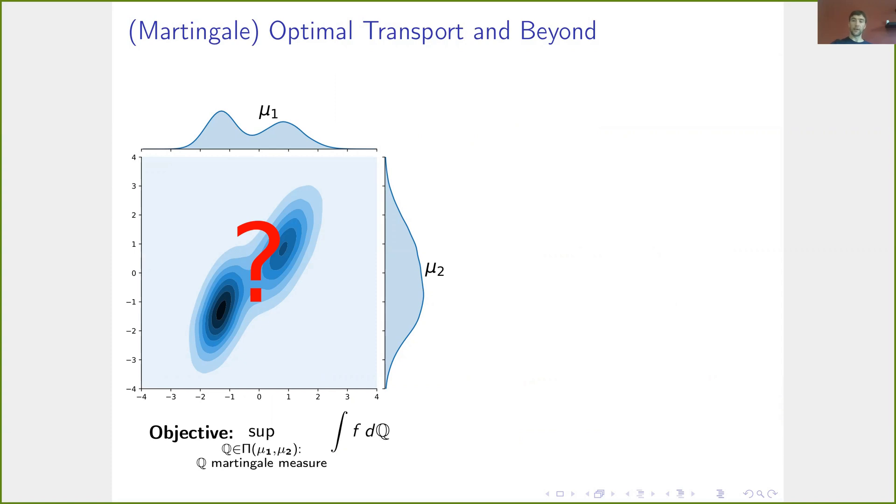So to calculate the highest possible price, we calculate the supremum over all such measures Q of this integral f dQ, where f may be the payoff of some financial derivative we want to evaluate.